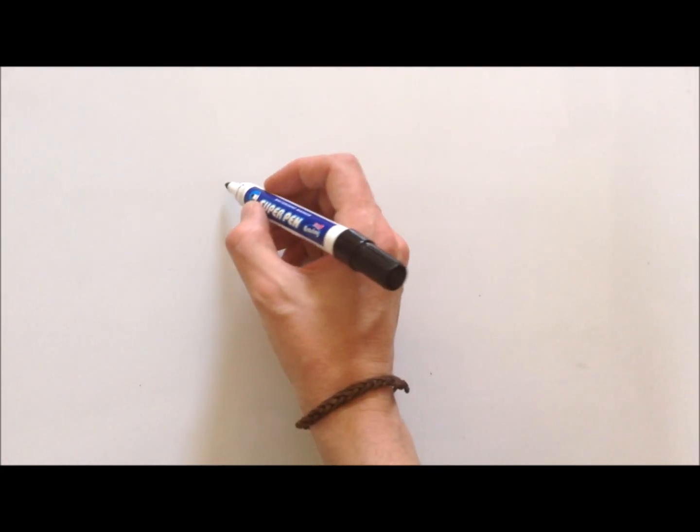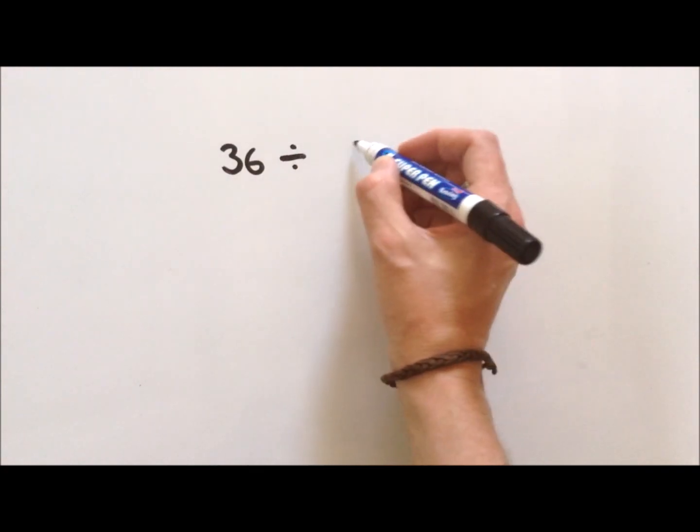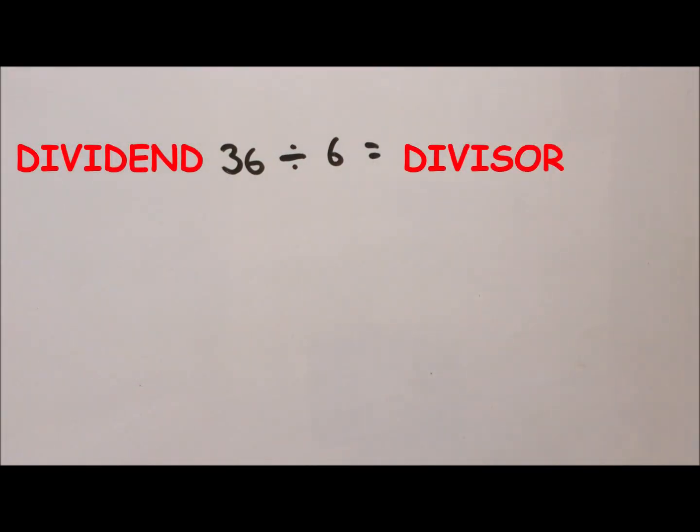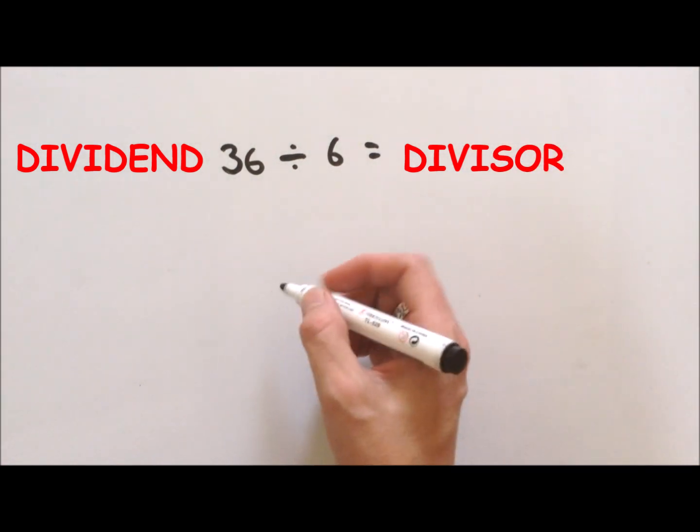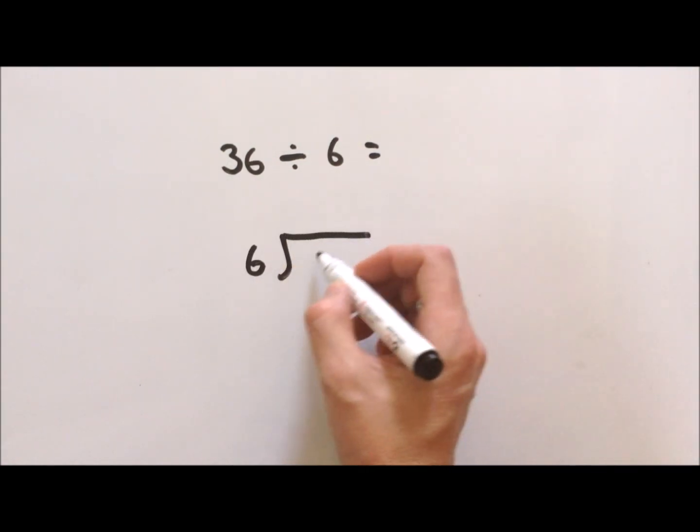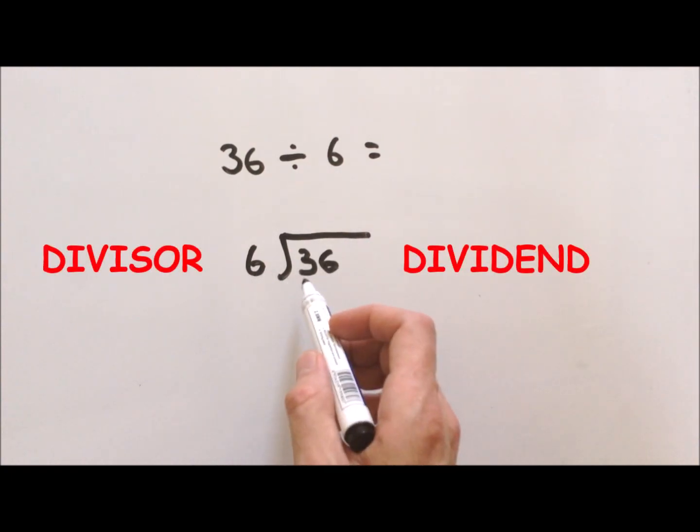Let's first of all do one for a normal bus stop division problem. Let's say 36 divided by 6. Now if you've seen my video on inverse relations and you know your times tables, you'll know the answer to this, but let's put it in bus stop format: 6 divided into 36. How many sixes go into 3? None.